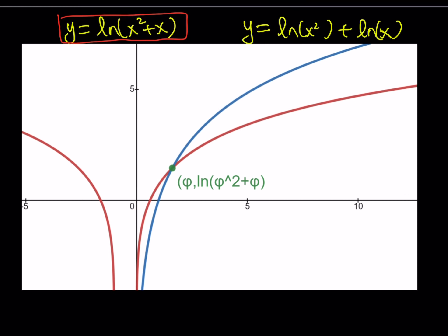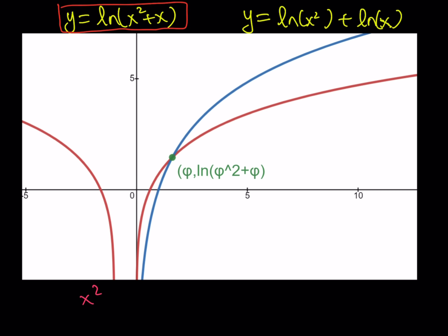Well, x squared plus x is greater than 0 if x times x plus 1 is greater than 0. And if you make a table and use the method of intervals, this implies that x is either greater than 0 or x is less than negative 1.